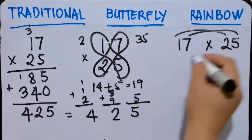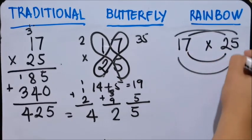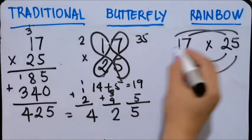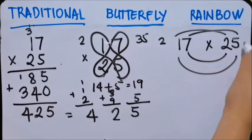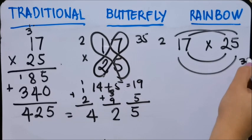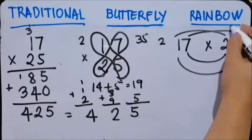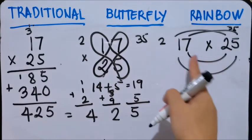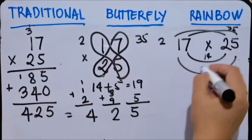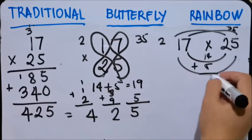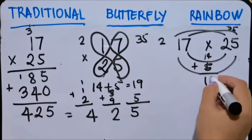First, second, and then the rainbow. First is 2, 35, and then 14 plus 5 is 19.